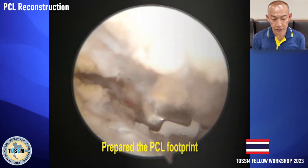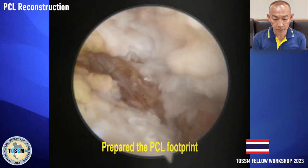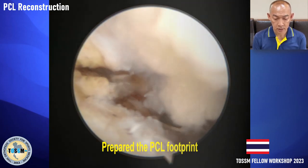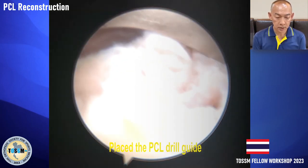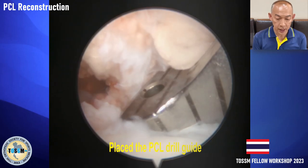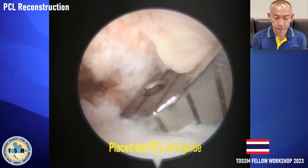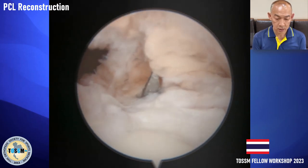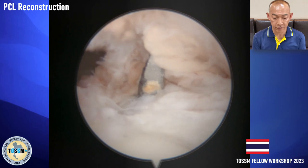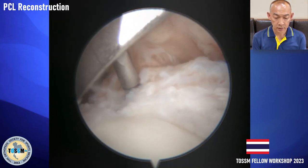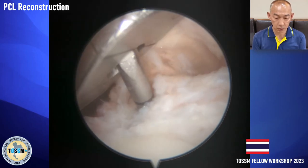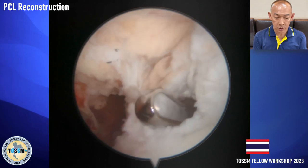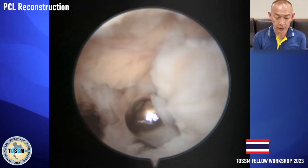This is the tibial footprint of the PCL. You can see that the posterior border of the tibial footprint is at the cartilage step-off at the posterior articular margin. We use the tibial guide to create the tibial tunnel footprint that is anterior to this cartilage step-off, and pass the guide wire. The guide wire is confirmed to be anterior to the cartilage step-off. Reaming is performed with protection of the neurovascular structures using a posterior guide. We then divide the aperture of the tibial tunnel to allow easy graft passage.